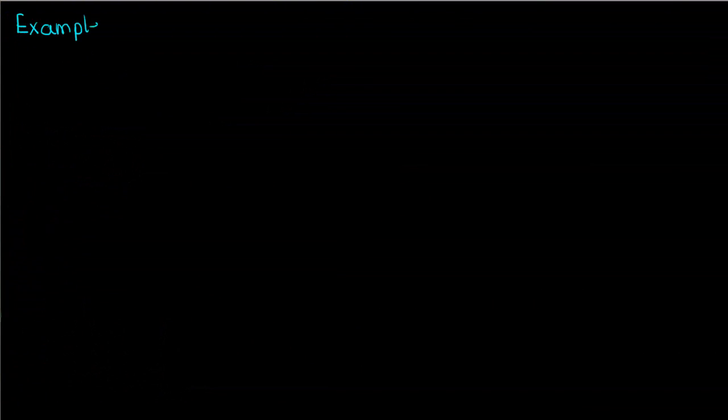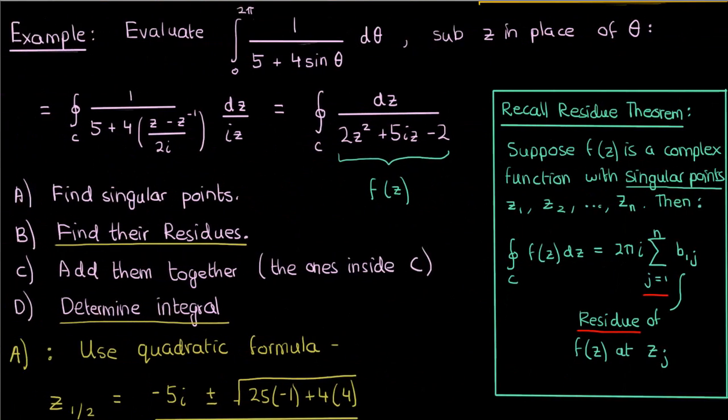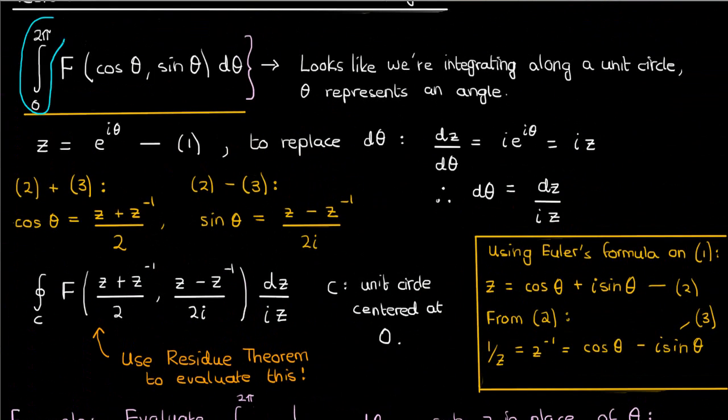Here we're going to find the integral from 0 to π of sine theta raised to the power 2n, where n is some positive integer. The issue here is that this integral is from 0 to π, but from what we've learned so far, we want our integrals to be between 0 and 2π. But going around this issue isn't too difficult once you recognize that sine theta raised to the power 2n is the same from π to 2π as it is from 0 to π.